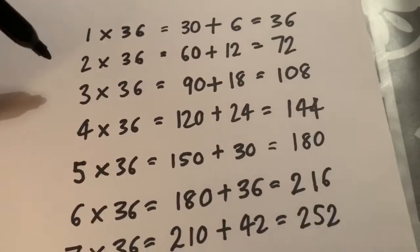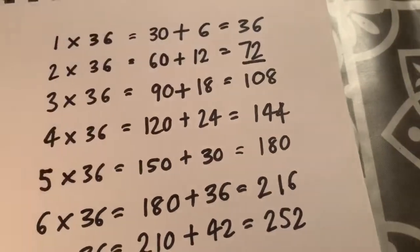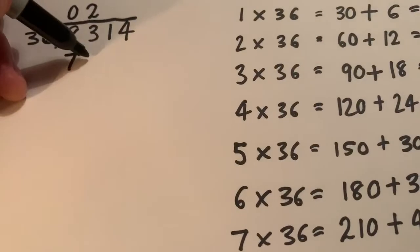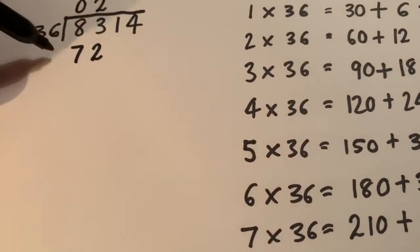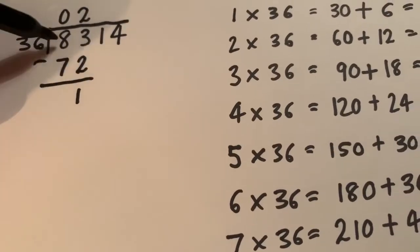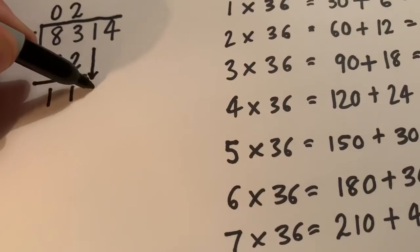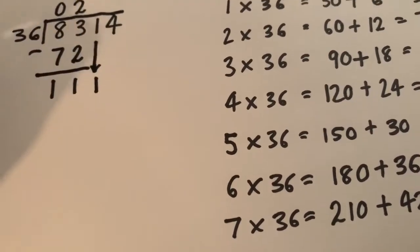And remember, on the fact box, the 2 times 36, let's underline that answer. And I need to bring the 72 across and subtract it from 83. 3 to take away 2 is 1, 8 to take away 7 is 1. And I'll move to the next digit and bring the next one down to create 111.